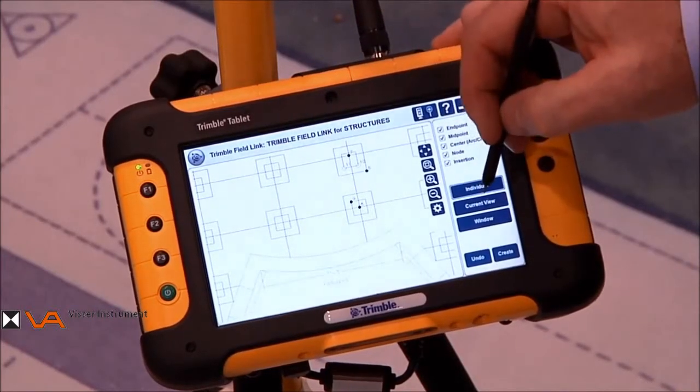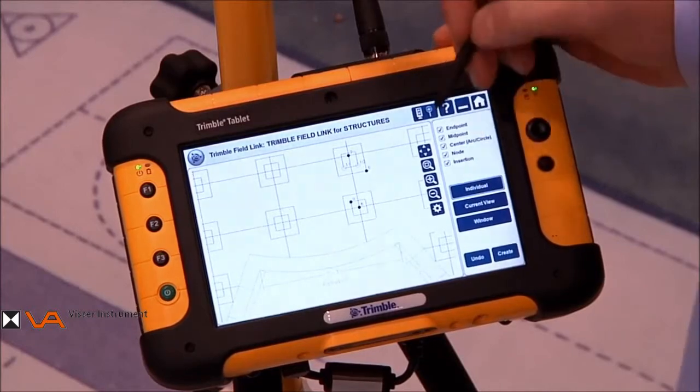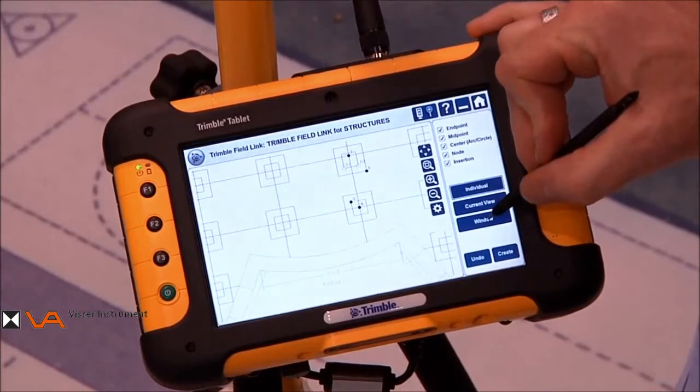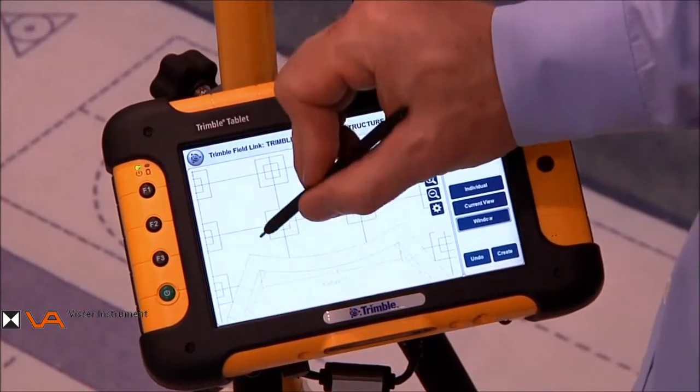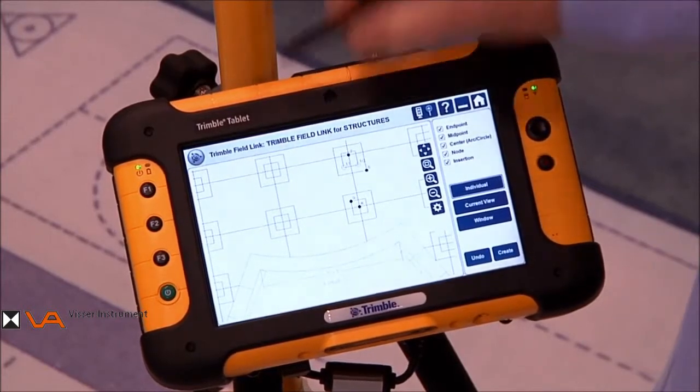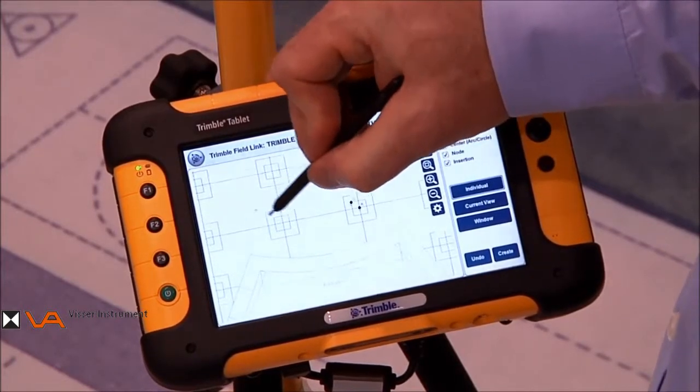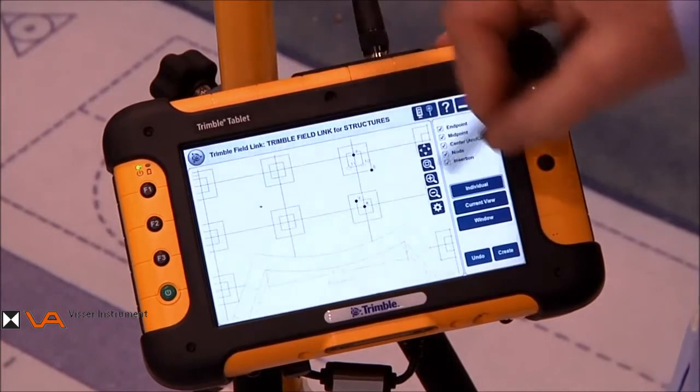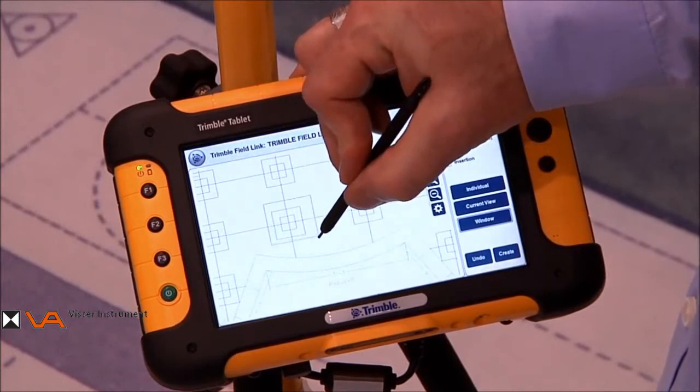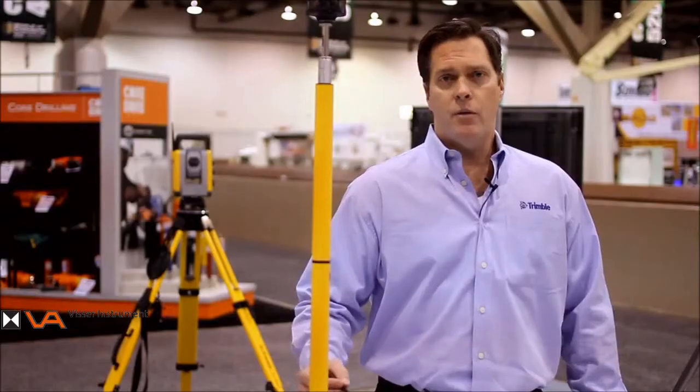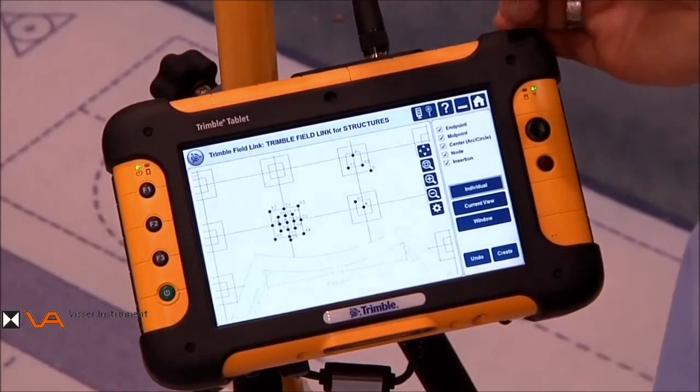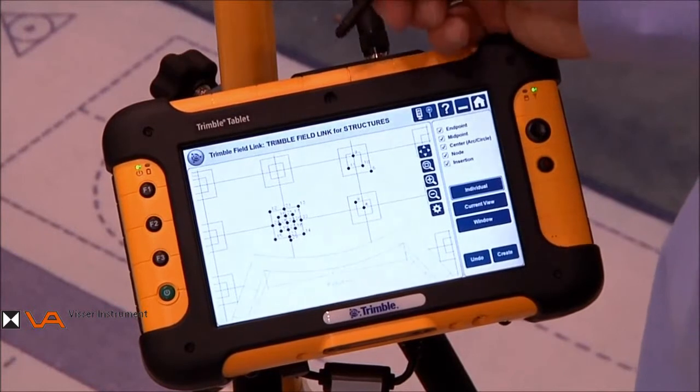We can also do it in current view, which means that it will create points all over the map at every position that's available. The third method is by window, which means we can simply come in and create a zoom window, and it will populate it with points inside. When we're satisfied with the points we've created, we simply hit the Create button.